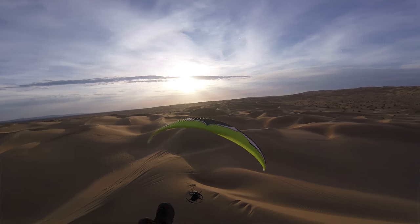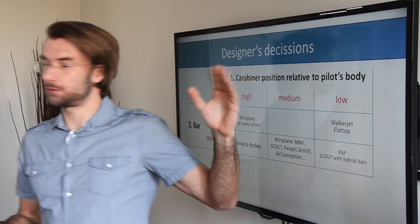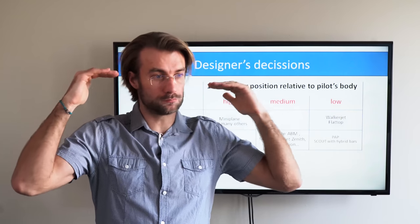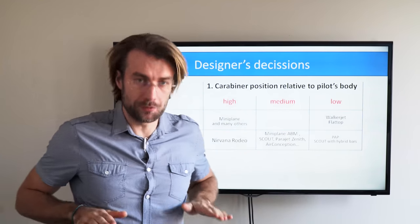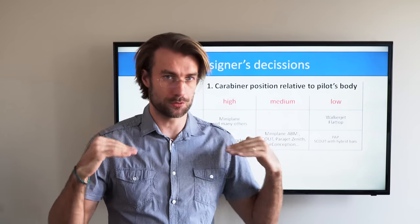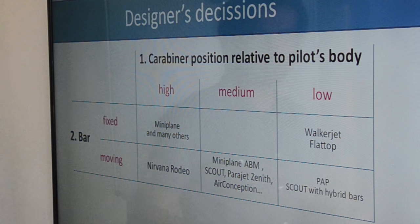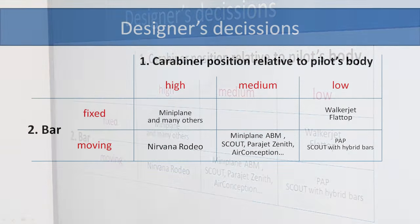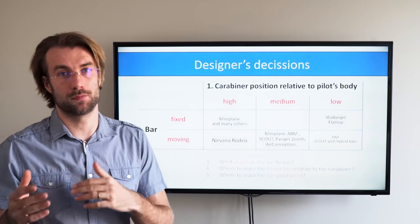There are a few decisions that a paramotor designer needs to make regarding suspension. The first is the position of the carabiner relative to the pilot's body — it could be high, around your ears, low just about here, or somewhere in the mid-range around your chest. The bars could be either fixed or moving, and you get quite many combinations of all these, each with its benefits and disadvantages that we will cover later.